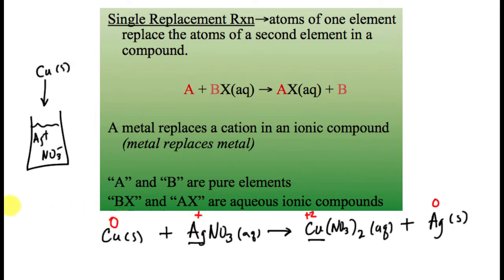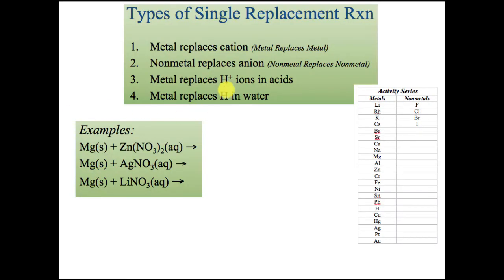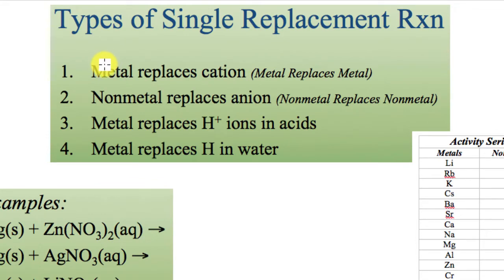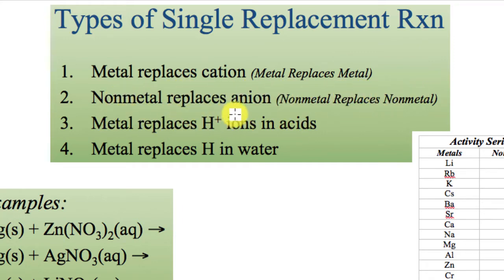That's the general type of single replacement reaction — a single element is going to replace an element in a compound. The types of single replacement reactions we'll look at are: metals replacing cations (metals replacing metals), nonmetals replacing anions (nonmetals replacing nonmetals), metals replacing hydrogen ions in acids, and metals replacing hydrogen in water.